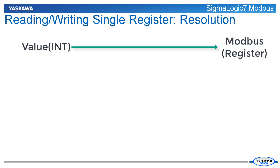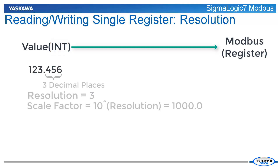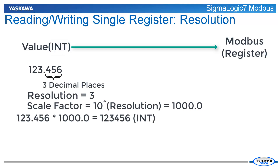Setting the resolution is an example of writing a value to a single 16-bit register. For the Sigma Logic 7 Modbus, recall that all values are sent as integer data. In order to send floating point data, values are scaled up by a number of implied decimal places to an integer. The resolution register is used to specify the number of implied decimal places. Since the resolution setting has a limited range, the value easily fits into one 16-bit register.